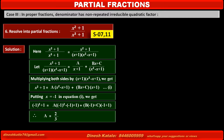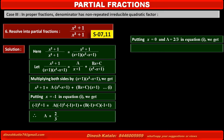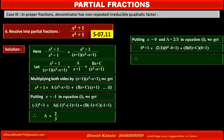Now, to find the value of C, we eliminate the term containing B. Putting x = 0 and A = 2/3 in equation 1: the left-hand side becomes 0² + 1 = (2/3)(0² - 0 + 1) + (b·0 + c)(0 + 1). Solving, we get C = 1/3.